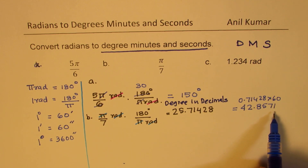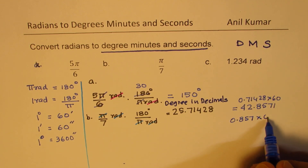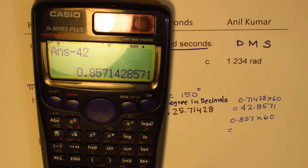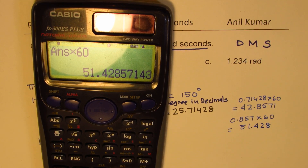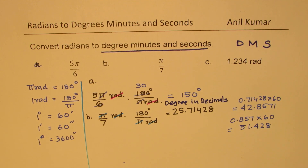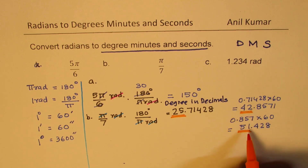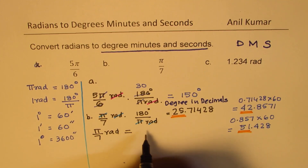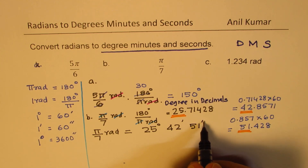To get seconds, we take the decimal part of the minutes — 0.8571 — and multiply by 60, which gives 51.428. So we can now write the answer: π/7 radians equals 25 degrees, 42 minutes, and 51 seconds.